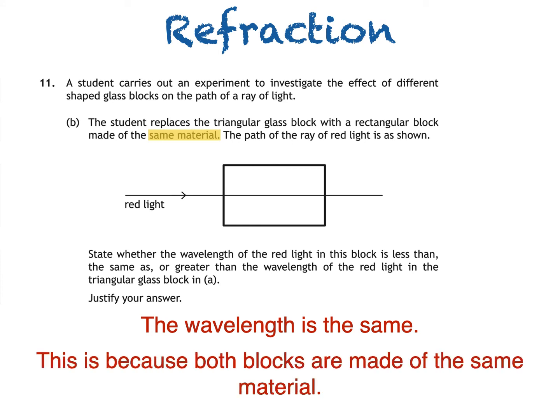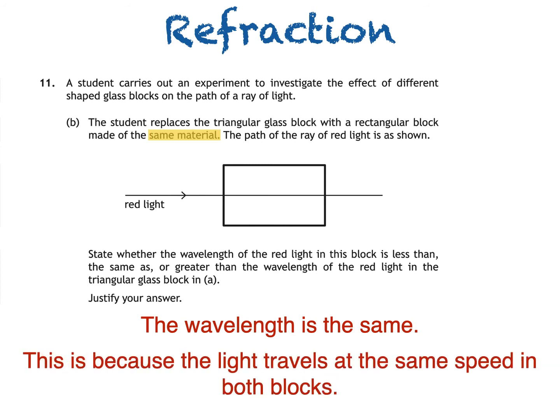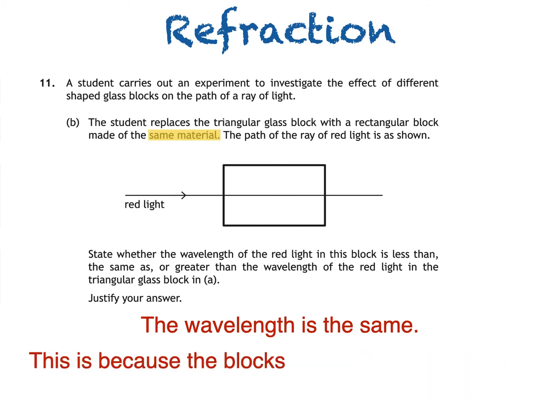We could also say that this is because the light travels at the same speed in both blocks. The marking scheme also allows us to say that this is because the blocks have the same refractive index. This is a term that you might not have heard of, because it's covered in higher physics.